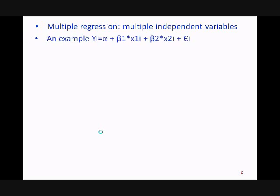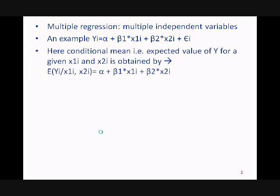For example, y equals α plus β1*x1 plus β2*x2. As you are seeing on screen, the conditional mean of y, or the expected value of y, is given by α plus β1*x1i and β2*x2i, where β1 and β2 are partial regression coefficients.